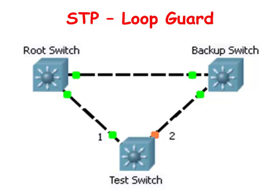One reason why the backup switch would stop sending BPDUs is because part of the switch software responsible for forwarding BPDU packets has malfunctioned. Just like when a computer program in Microsoft Windows crashes — the mouse works fine, the other programs continue to run normally, but one window freezes up and doesn't work correctly. In this case, the backup interface cannot send but only receive.